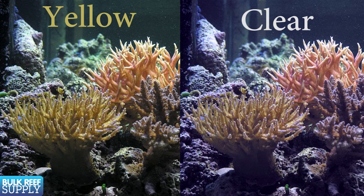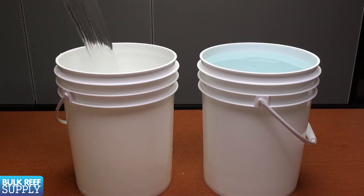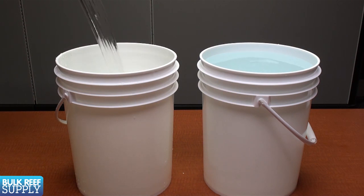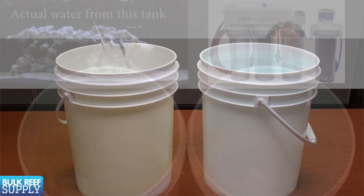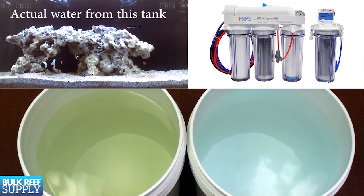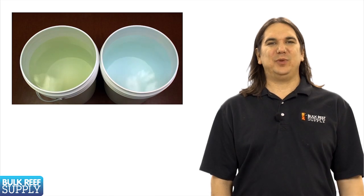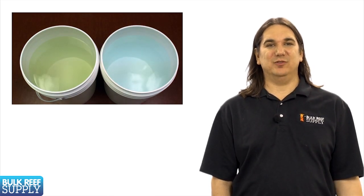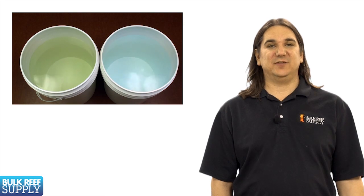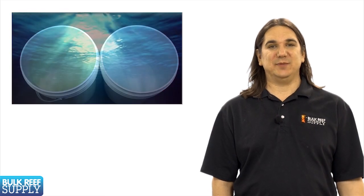It's just not apparent because you are used to looking at it this way. The quickest way to tell for sure is to get two white five gallon buckets, fill one with RODI water and one with water from your tank. A vast majority of reefers will find the water to be much more yellow than they thought. The yellow pigments are not only undesirable from a visual standpoint, but they also significantly reduce light penetration.